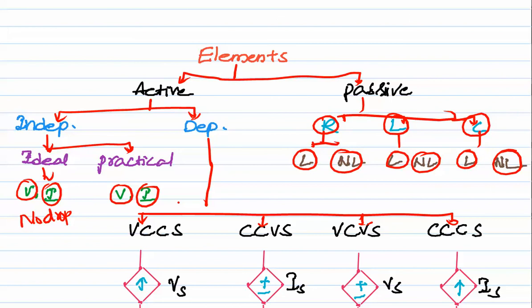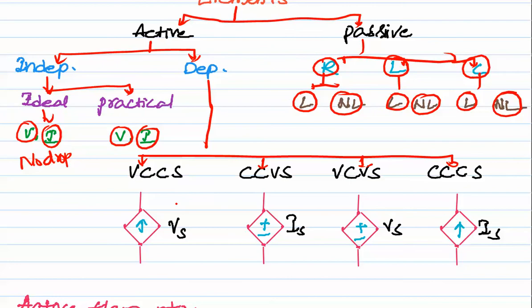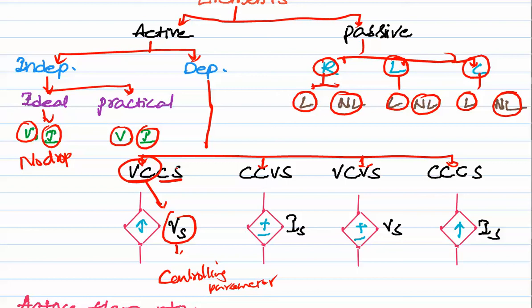Active dependent elements are named as: voltage controlled voltage source (VCVS), current controlled voltage source (CCVS), voltage controlled current source (VCCS), and current controlled current source (CCCS). In a voltage controlled current source, the controlling parameter is voltage Vs, and the output is a current source inside the box. In a current controlled voltage source, the controlling parameter is current, and the output is a voltage source inside the box. In a current controlled current source, the controlling parameter is current and the output is a current source.